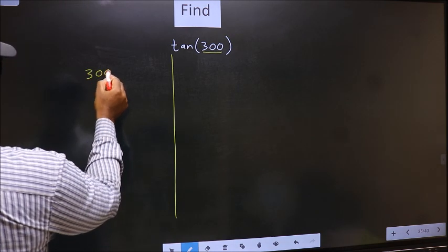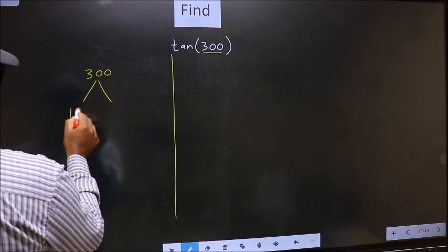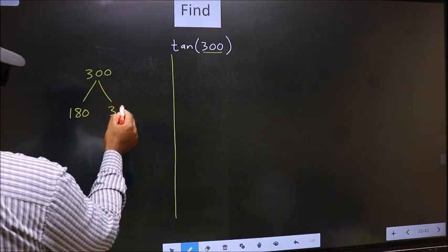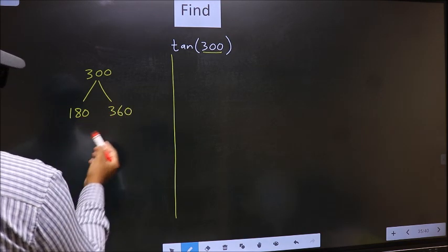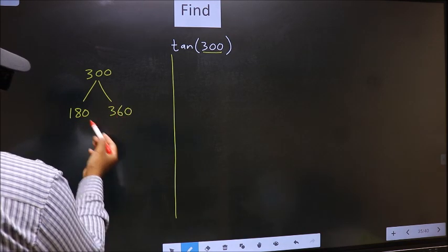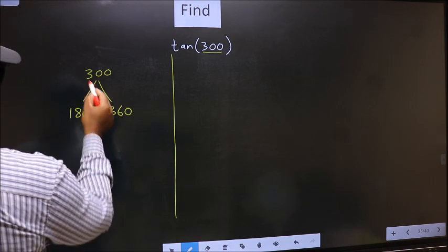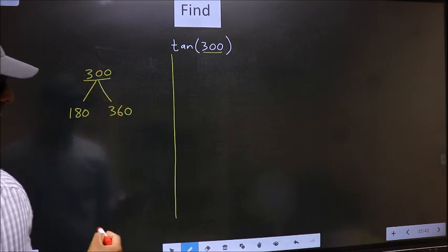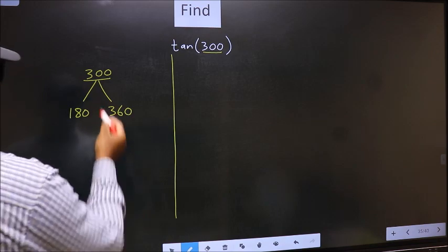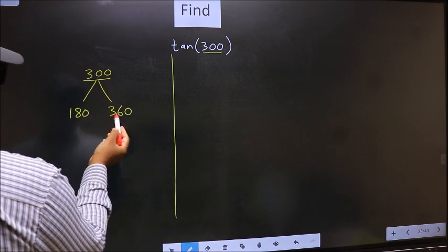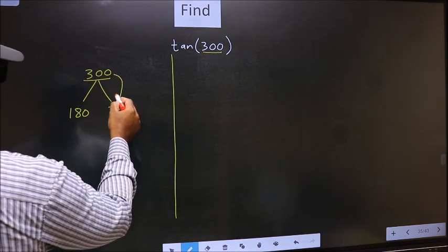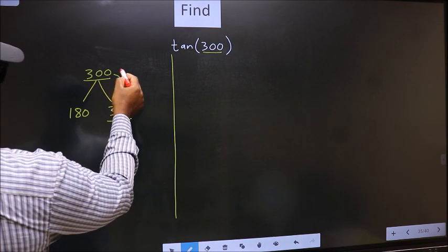300 lies between 180 and 360. This is 180×1 and this is 180×2. Between these two numbers, 300 lies. Next, 300 is close to which number? This is close to 360, so in place of this...